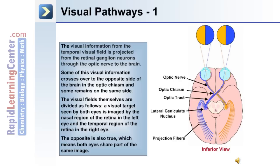The pathways of vision: visual information from the temporal visual fields is projected from the retinal ganglion neurons through the optic nerve to the brain. Some of this visual information crosses over to the opposite side of the brain at the optic chiasma, while some remains on the same side. A visual target seen by both eyes is imaged by the nasal region of the retina in the left eye and the temporal region of the retina in the right eye. This gives rise to the optic tract, which delivers information to the lateral geniculate nucleus and through projection fibers to the occipital lobe of the brain.